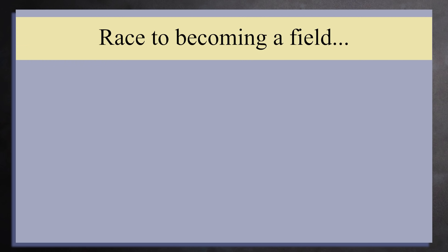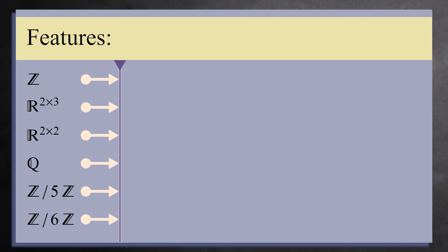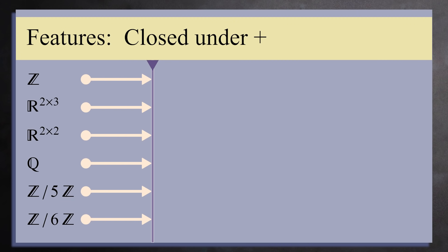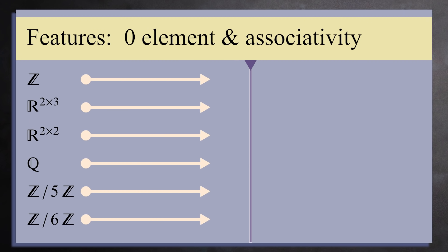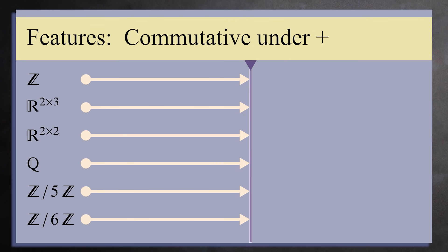Consider these 6 sets: the integers, the 2 by 3 real matrices, the 2 by 2 real matrices, the rational numbers, the integers mod 5, and the integers mod 6. Notice that all 6 sets are groups under addition. They're closed under addition. You can add any 2 elements together and the sum is in the set. The negative of each element is in the set. There's an additive identity and the associative property holds. Better still, all 6 groups are commutative under addition. So as a first pass, all 6 objects are commutative groups under addition.